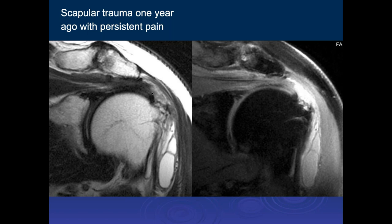A high-grade partial bursal-side tear of the supraspinatus with deep fibers intact is considered high-grade because it involves more than 50% of the tendon thickness. However, on arthroscopy, the joint space will likely appear normal with no tear visible. It's important to describe this carefully—you must warn the surgeon that the tear is on the bursal side, not the joint side. I've received complaints from orthopedic surgeons who did arthroscopy and found no tear because the report didn't specify it was a bursal-side high-grade partial tear that does not extend to the joint surface.